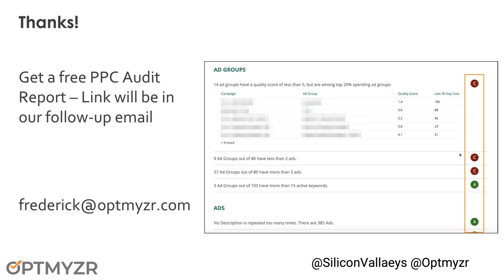Question: We recently just configured our conversion tracking, so we don't have a lot of conversion data. How do we configure our bid strategy until we get more data? In that case, you're kind of stuck with manual CPC.